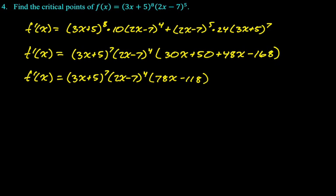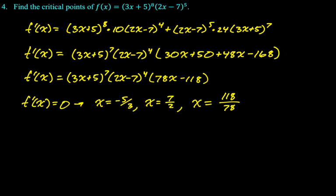And then critical point. Anywhere this derivative equals zero. So that's going to be negative 5 thirds, 7 halves, and 118 over 78. But 118 over 78 will simplify, so if you want to, you can. Probably a good idea. Multiple choice, it would definitely be simplified. Anyway, that's the entire thing. I hope this was helpful, and good luck!